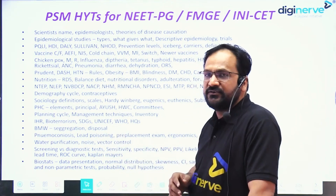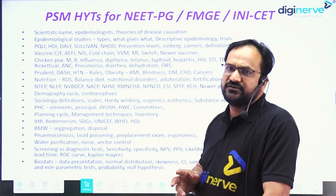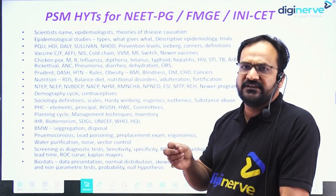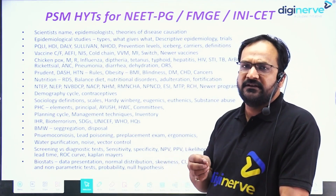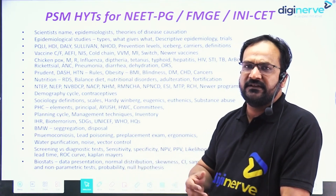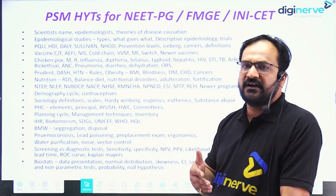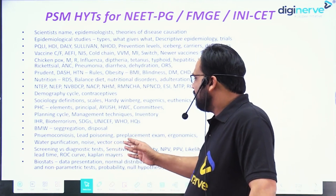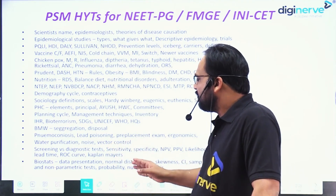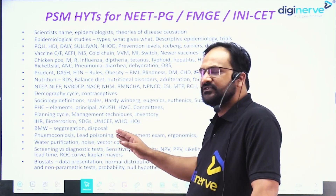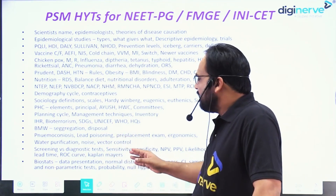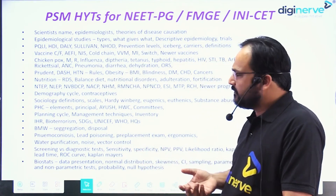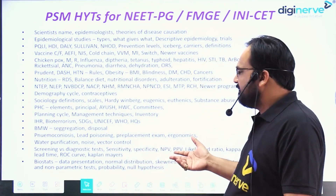Pneumoconiosis is a favorite question — they ask so many times, giving you a scenario of ground-glass opacity present in a patient and asking what the diagnosis is. They also ask about noise in occupational health, and in vector control there are some questions from vector control as well. Then regarding screening, what is the difference between a screening test and a diagnostic test.